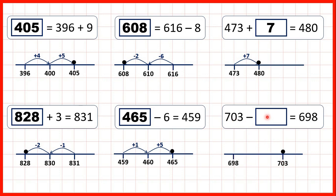and then work out how many we need to subtract, how many we need to count back to get to 698. Subtracting 3 would take us to 700, and then we would need to subtract another 2 to get to 698, so that's subtracting 5 altogether, so our missing number is 5.